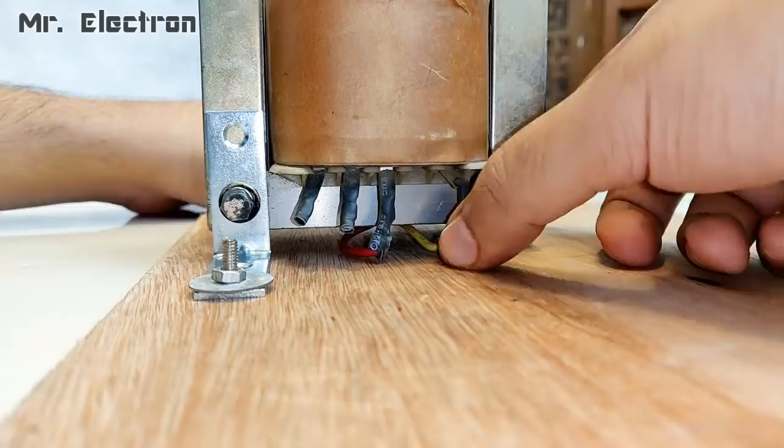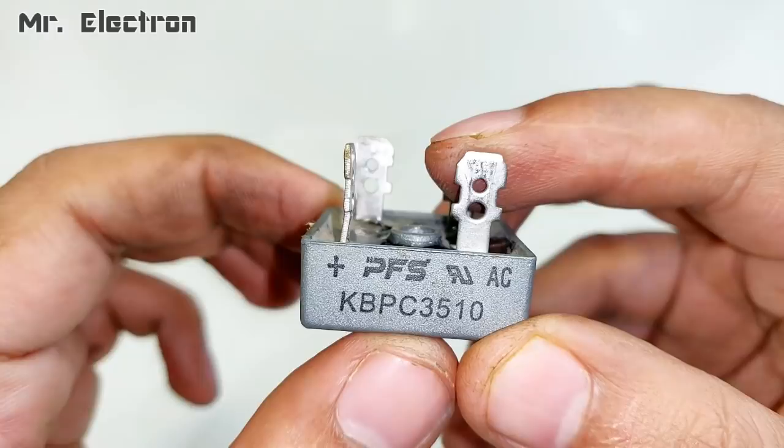The little space left below the transformer is going to be useful. Now guys, this is a 35 amperes AC to DC converter or bridge rectifier KBPC 3510.